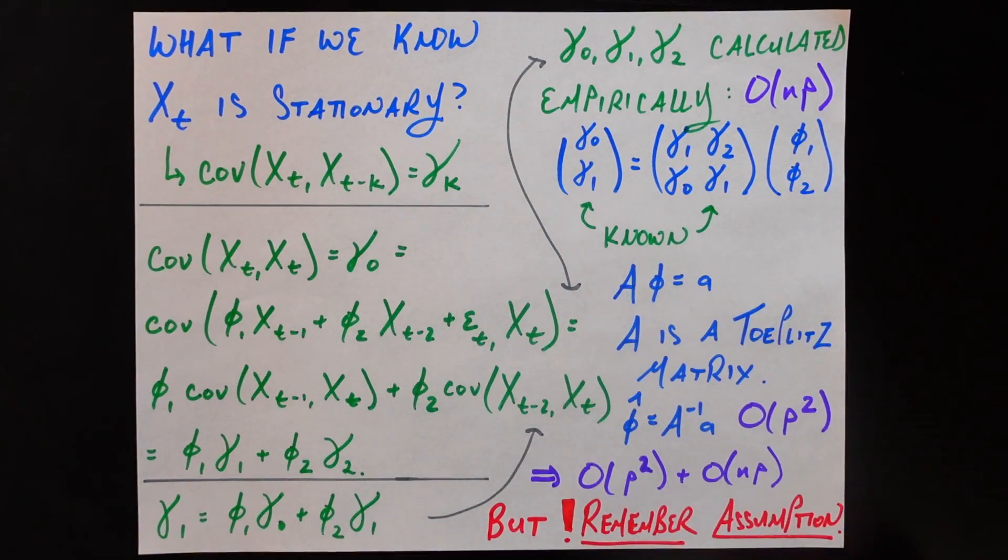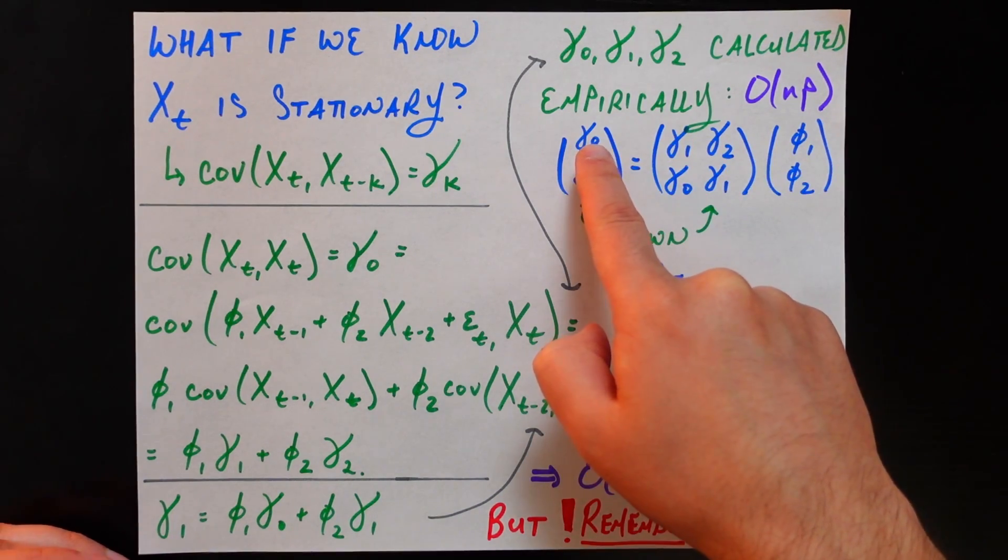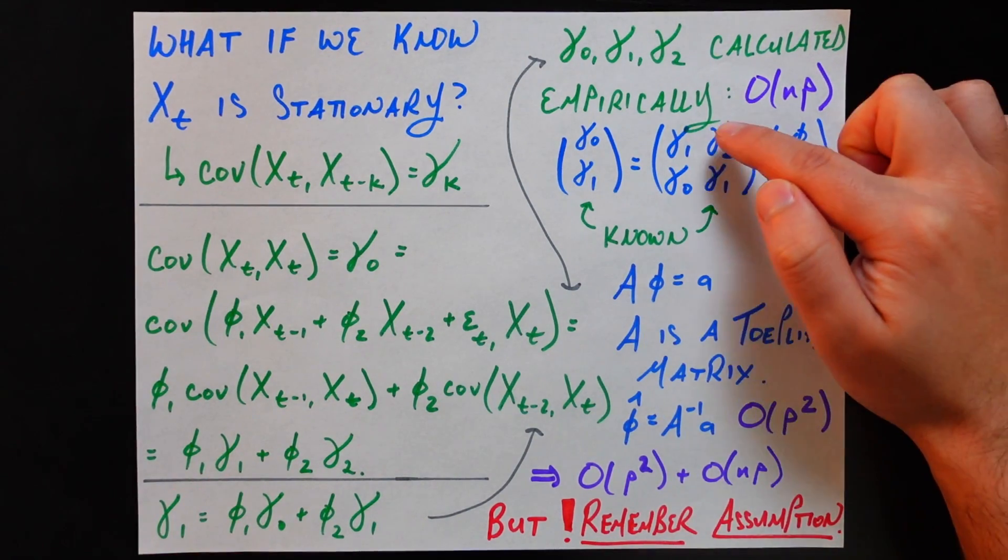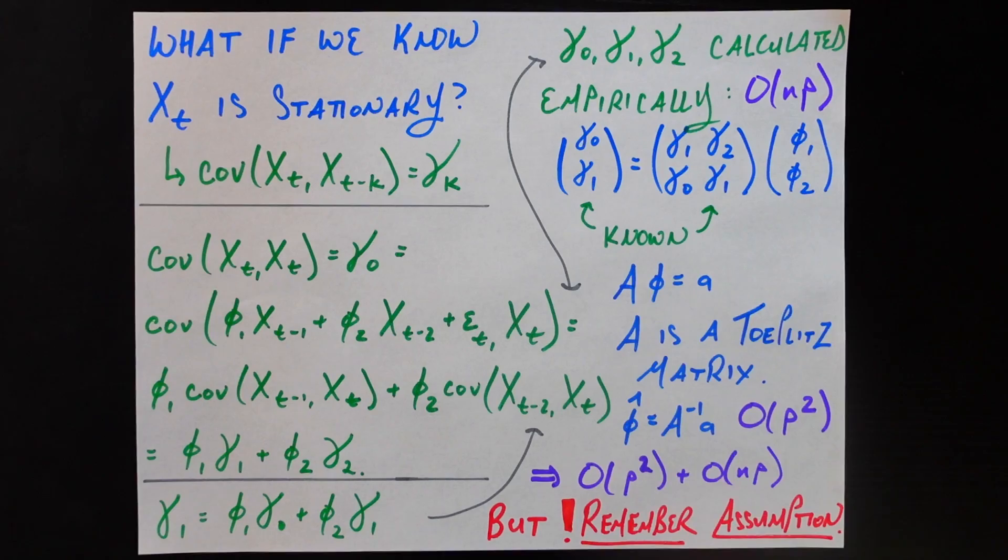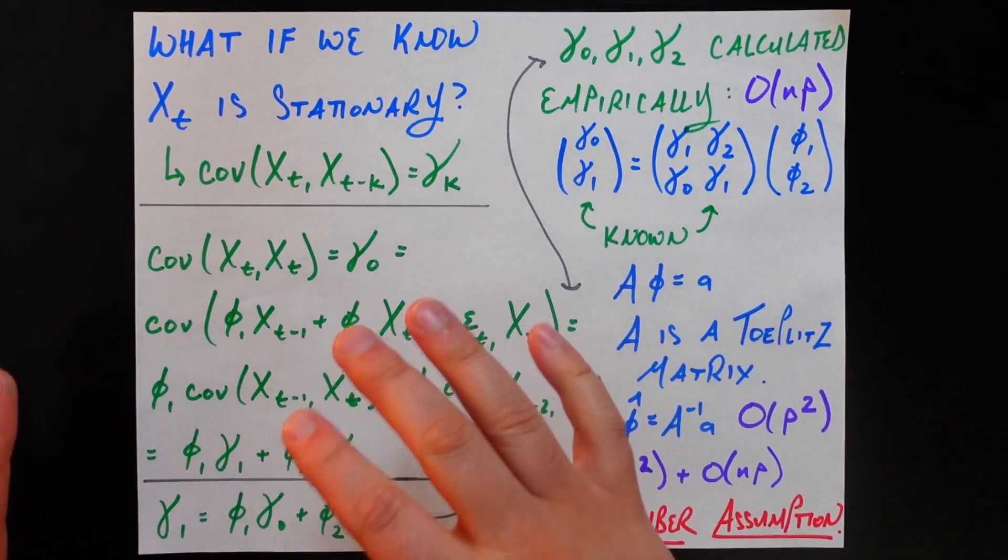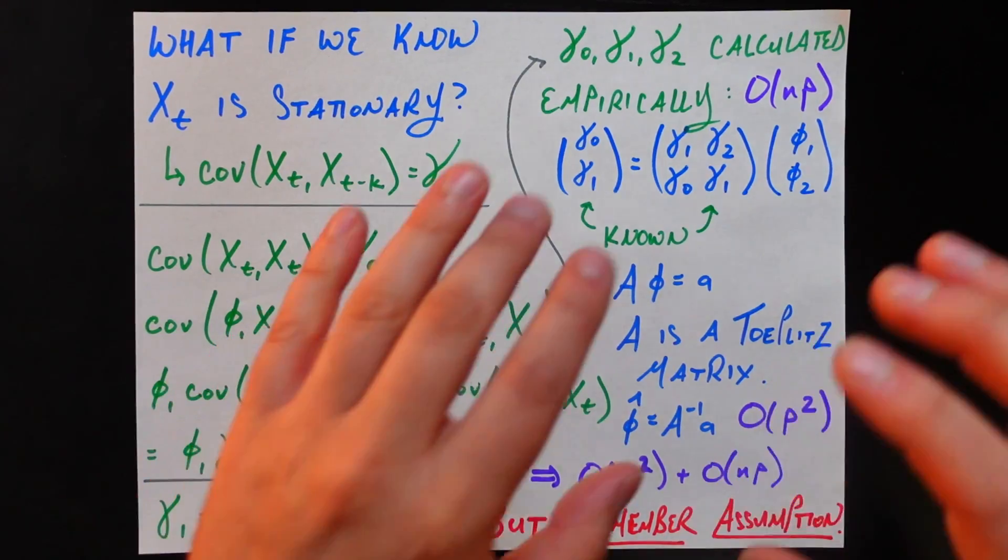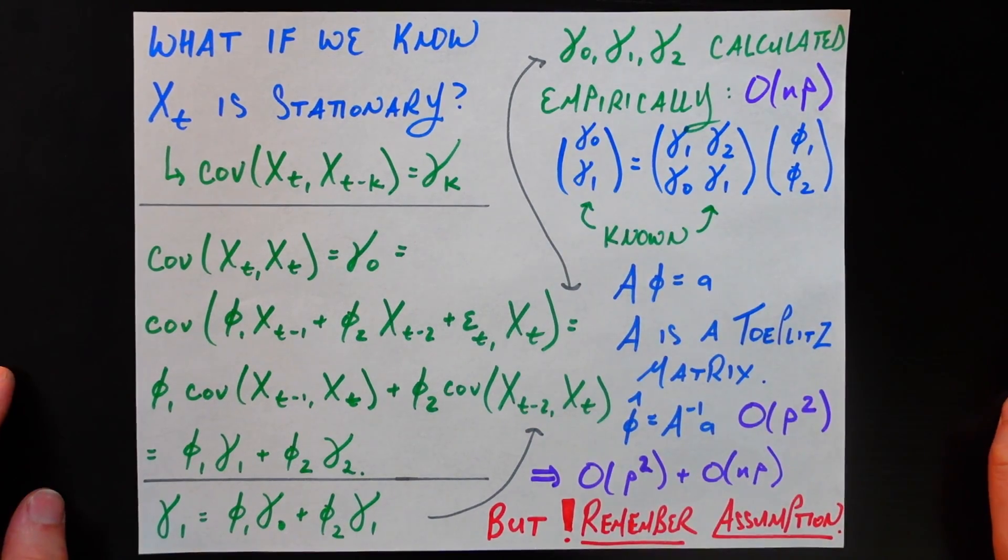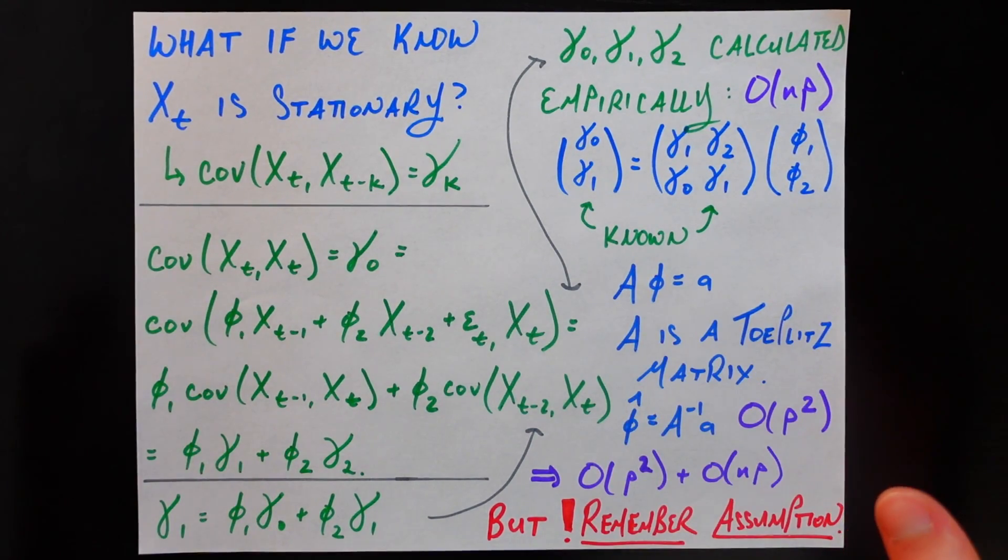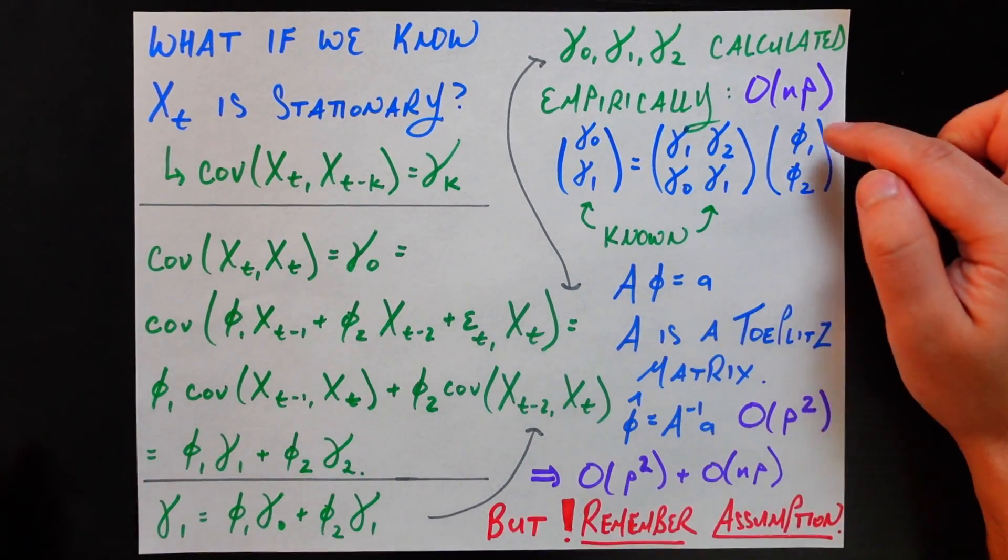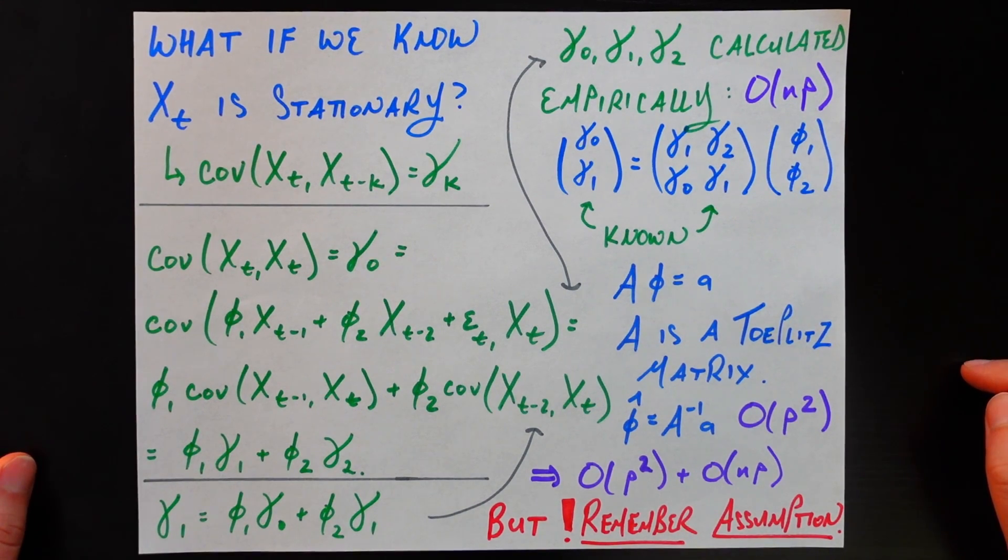So here I've written in matrix vector form the exact two equations we have here. The first equation basically is saying gamma_0, gamma_0 is equal to phi1 times gamma_1, phi1 gamma_1, plus phi2 times gamma_2, phi2 gamma_2. And the next equation is exactly this equation down here. So nothing new is being said here. I'm just packaging the knowledge that we got from this step and this step into a matrix vector form. And again, now this matrix full of gammas and this vector full of gammas is known. We calculated those empirically, which took us O(N times P). Recall that. What is still unknown is this phi1, phi2. Those are the exact parameters that we're trying to estimate.